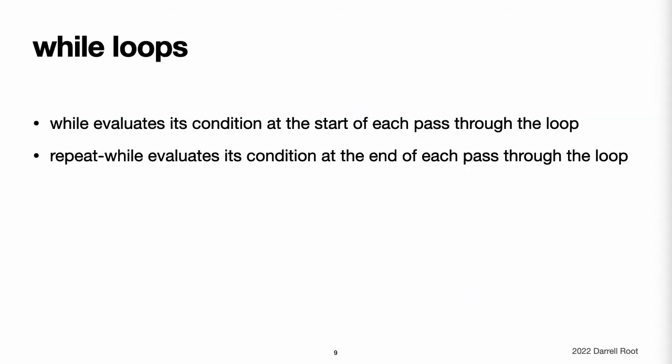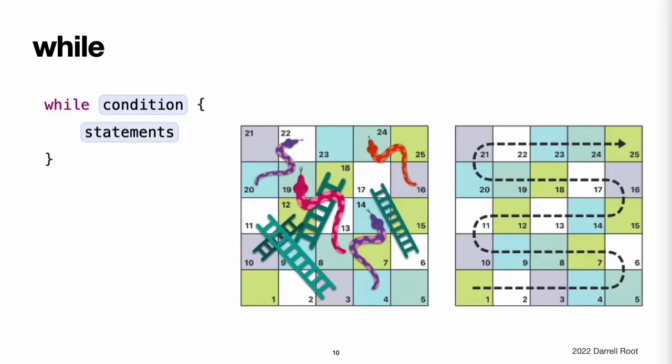While Loops. A while loop performs a set of statements until the condition becomes false. These kinds of loops are best used when the number of iterations is not known before the first iteration begins. Swift provides two kinds of while loops. While evaluates its condition at the start of each pass through the loop. Repeat-while evaluates its condition at the end of each pass through the loop.